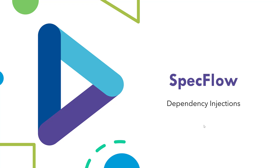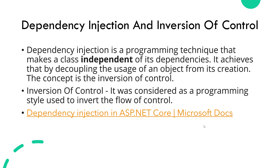Hi guys, my name is Karthik and I am from zeroautomation.com. Welcome to the advanced series of SpecFlow. In this video we'll be talking about dependency injection and how we can leverage the power of SpecFlow's dependency injection. Dependency injection is a programming technique that makes a class independent of its dependencies. It achieves that by decoupling the usage of an object from its creation, and the concept is the inversion of control, which is considered a programming style used to invert the flow of control.